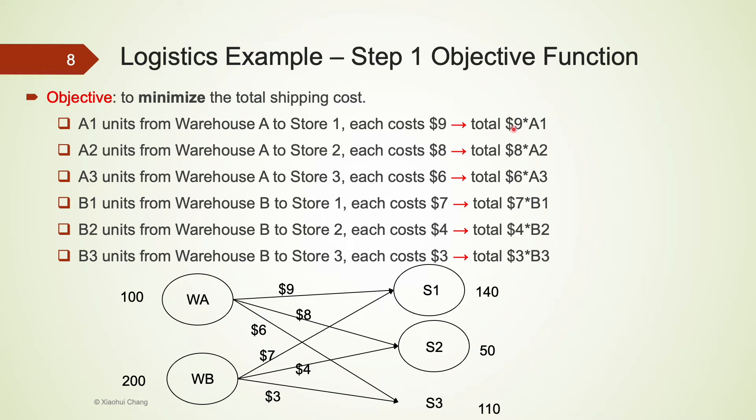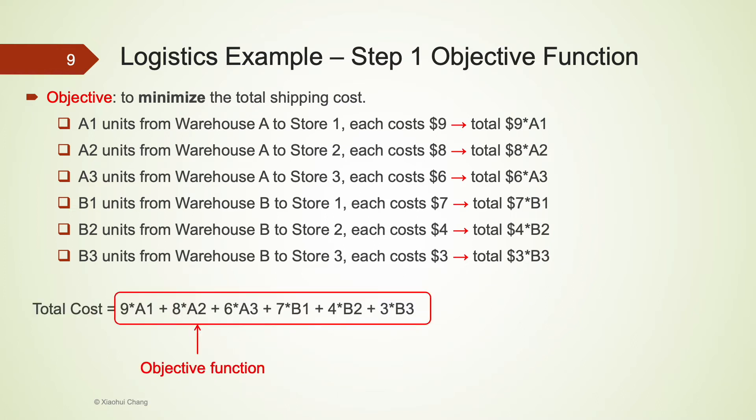So we multiply 9 by A1, 8 by A2, 6 by A3, and so on and so forth. So the total cost, or the final sum, is the objective function. Remember, the manager's goal here is to minimize the total shipping cost. So we would use min in Lingo. Again, be sure to end this line with a semicolon.